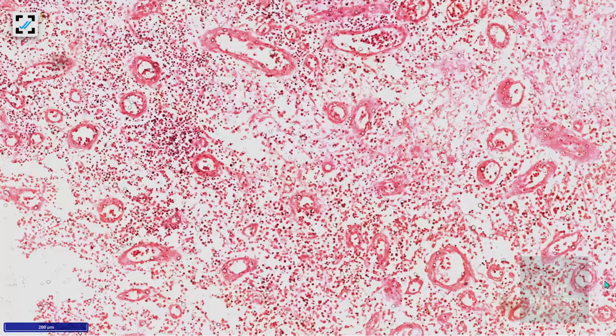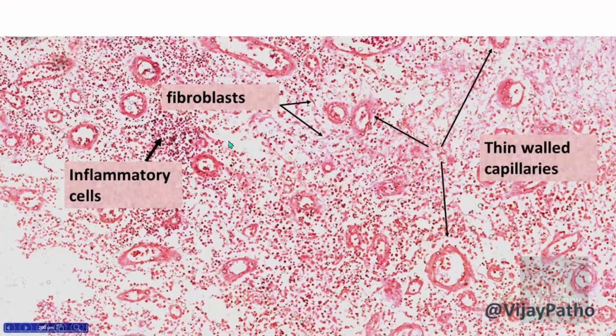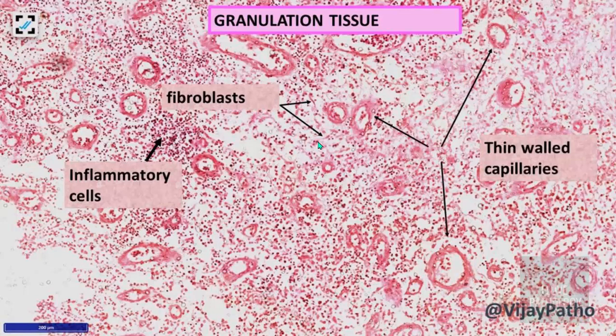Now, do we have a mimicker for hemangioma? As an undergraduate student you will be asked about the differential diagnosis for capillary hemangioma. Here is another type of vascular tissue. You might call this a capillary hemangioma because you see lots of thin-walled capillaries, but look more carefully — there are a lot of inflammatory cells. By definition hemangiomas will not have inflammation, or at most very little. Here you find lots of inflammatory cells and also fibroblasts. So what is this? This is granulation tissue.